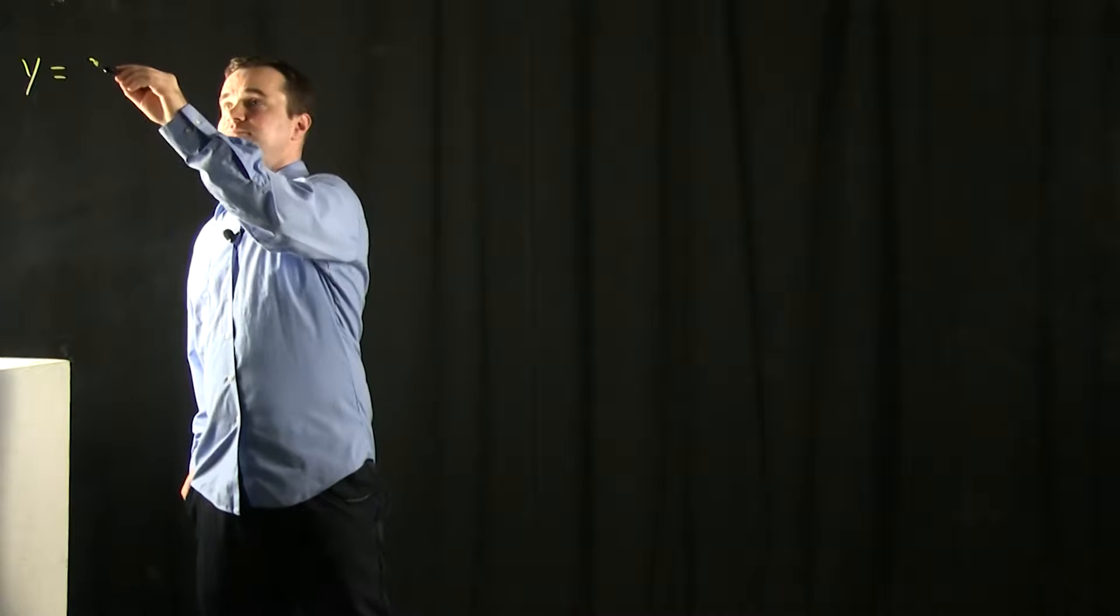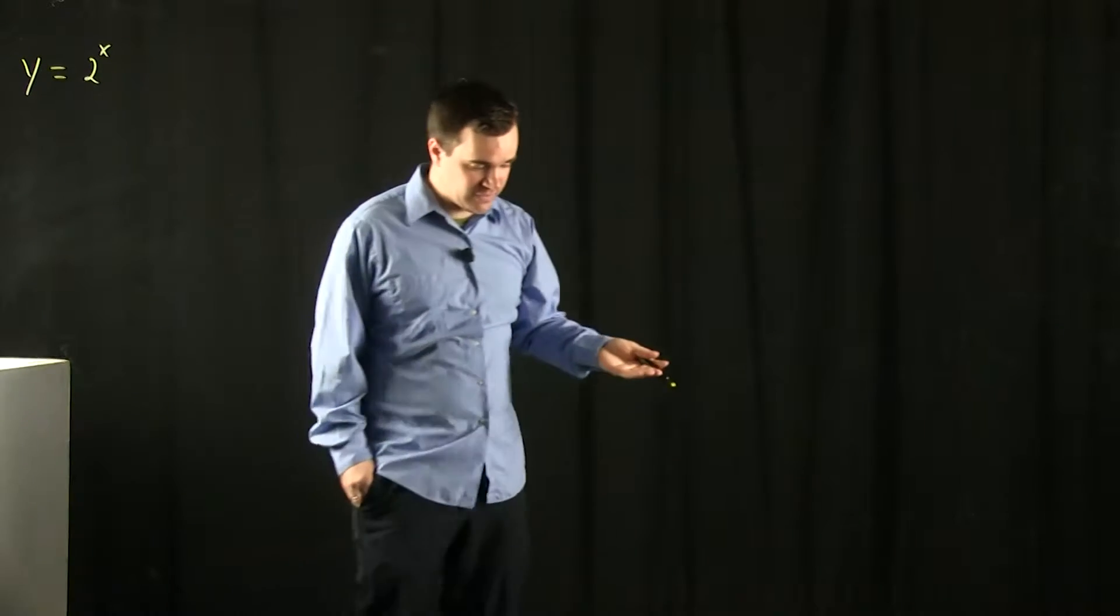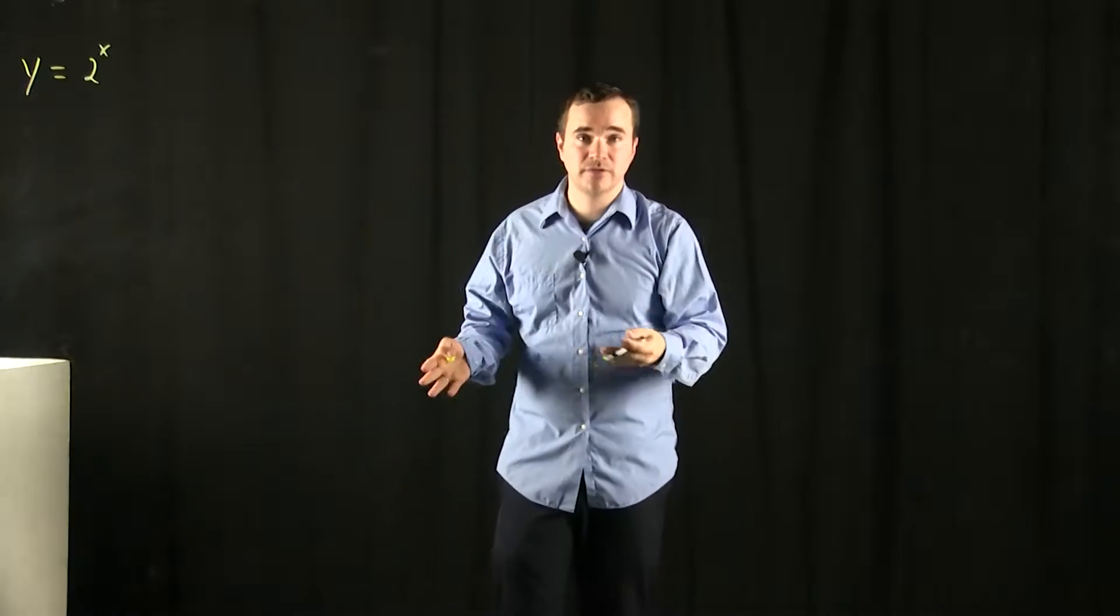I want to show you how to take derivatives of exponential and logarithmic functions with any base. To start with, I'm just going to pick a specific number. Let's say instead of e to the x, say that we wanted y equals 2 to the x. And how can we figure out the derivative of that?